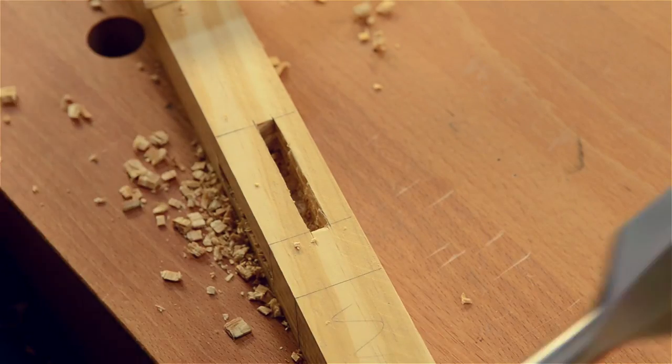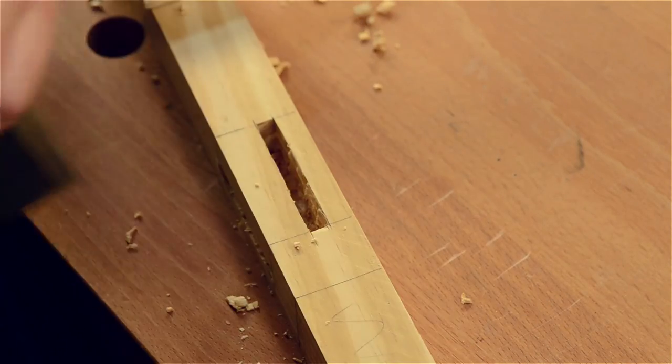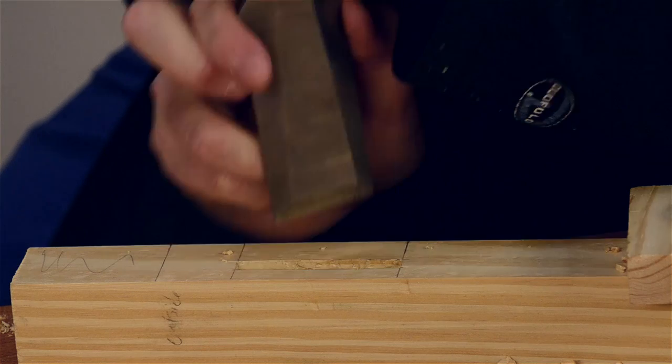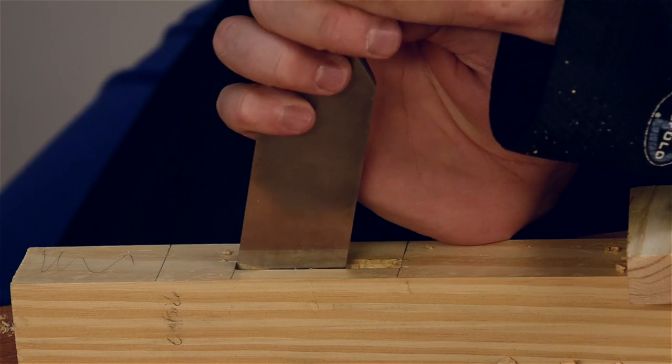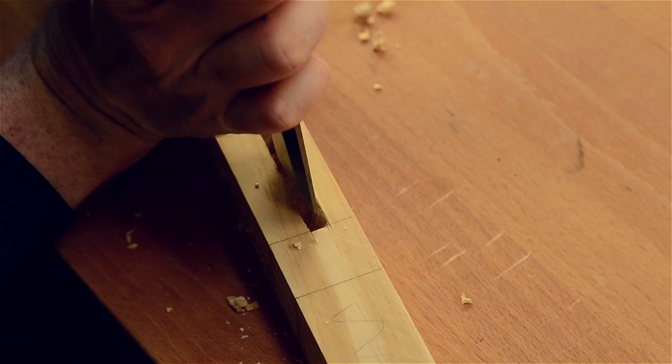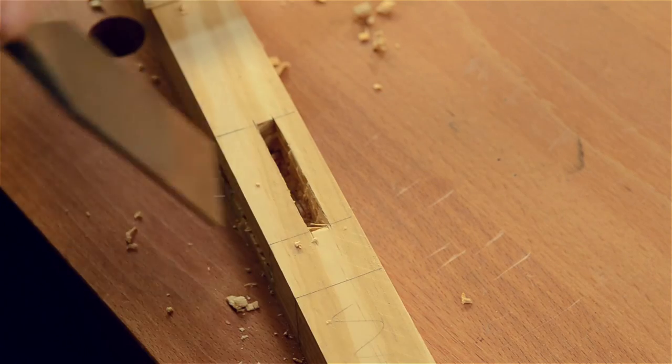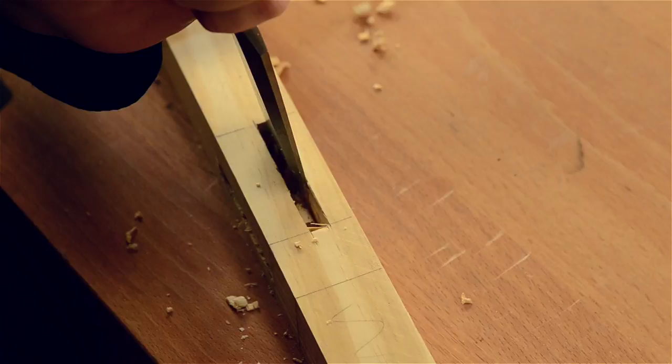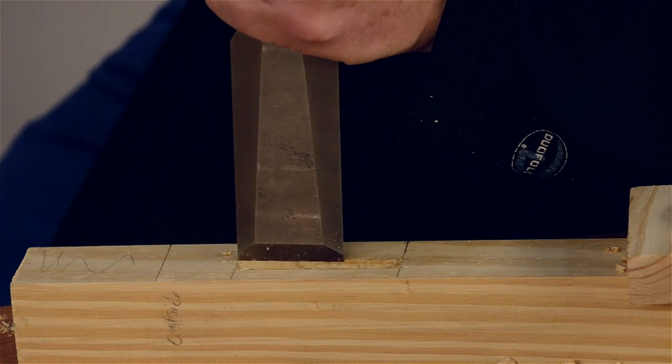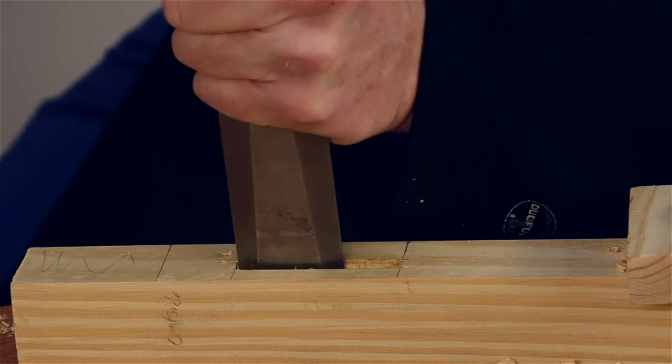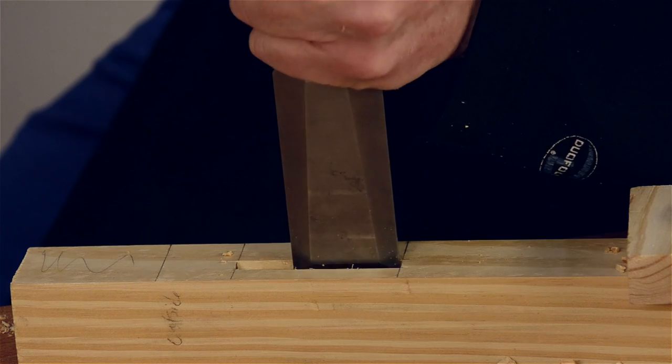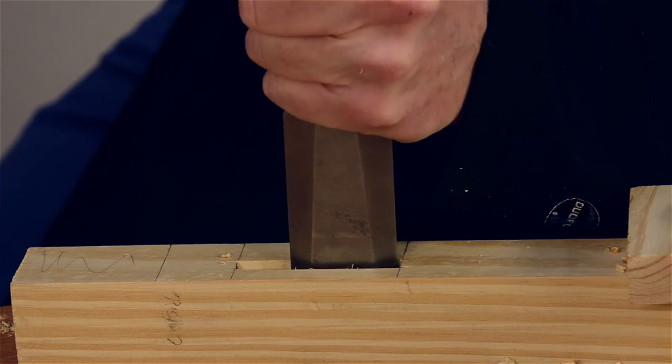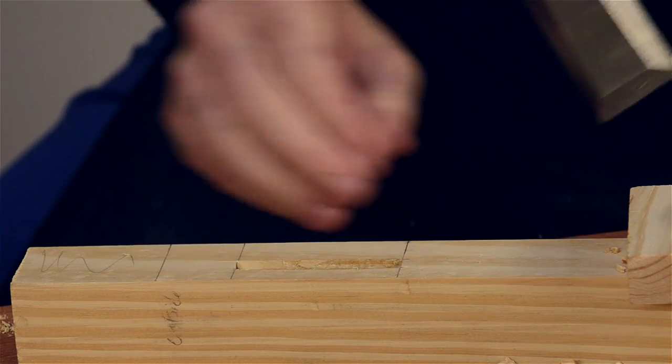All right, then what I like to do is get a large chisel and kind of come down and pare these sides. See if you can see that. Just make sure it goes up against your line, your marking gauge, and this kind of cleans up the walls of the mortise and makes sure that there is not any gunk sticking out that's going to get in the way of the tenon.